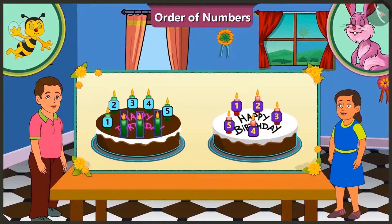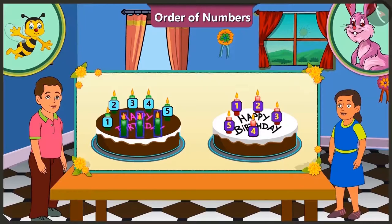And we can see 3 more candles in Bunty's cake. That means the number of candles in Bubbly's cake is lesser than the number of candles in Bunty's cake. Bunty has 3 more candles. Bubbly has a total of 5 candles. So how many candles would Bunty have? Bunty will have 3 more candles, that makes 6, 7, and 8.